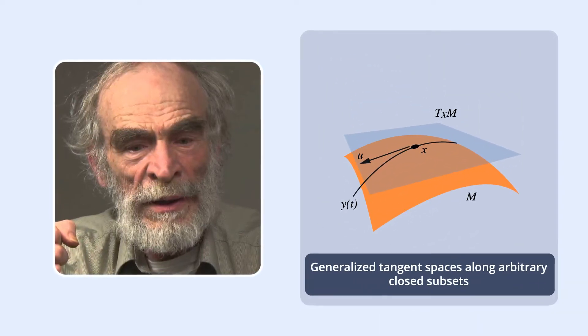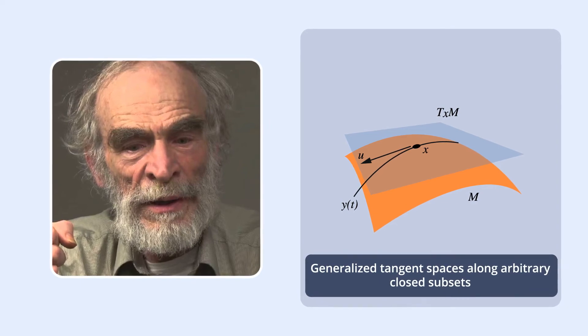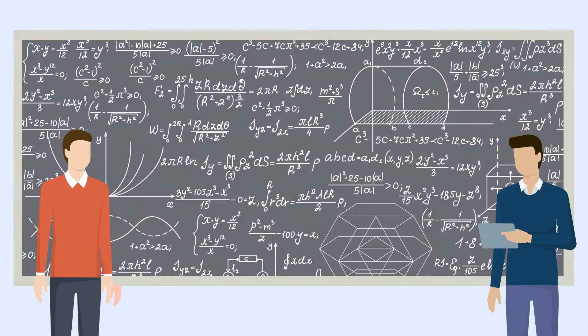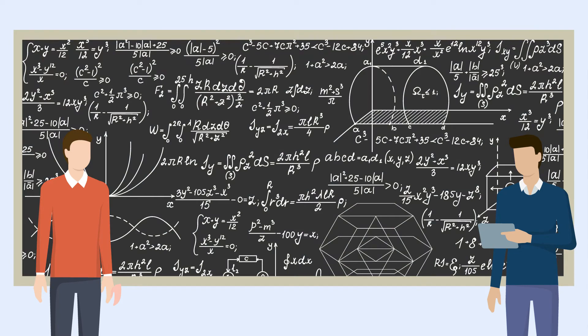The proof requires new concepts such as generalized tangent spaces along arbitrary closed subsets. They then went on to apply this general result in a variety of scenarios,